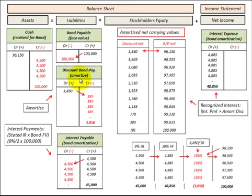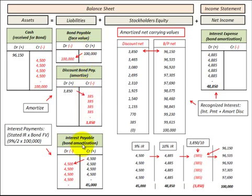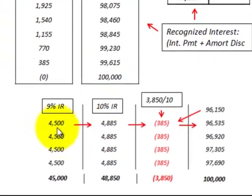Let's calculate the discount on bonds payable. Remember, this discount acts as added interest expense to bonds payable and it's a balancing account between the cash account and the bonds payable account, and also between the interest payable and the interest expense.